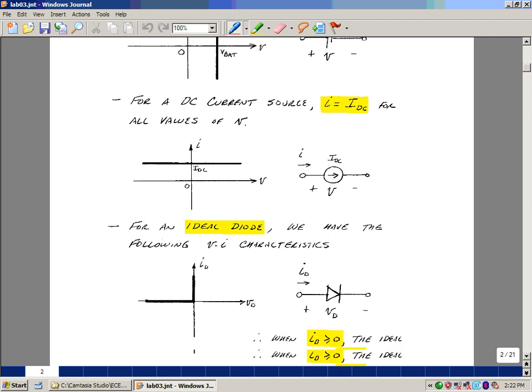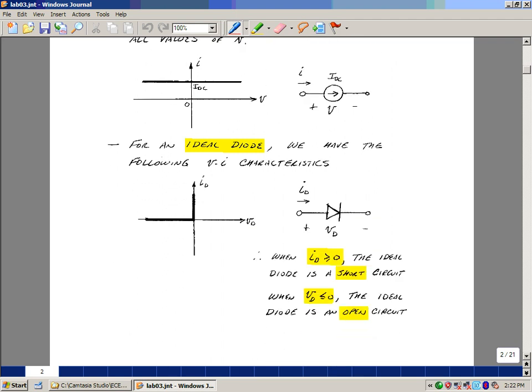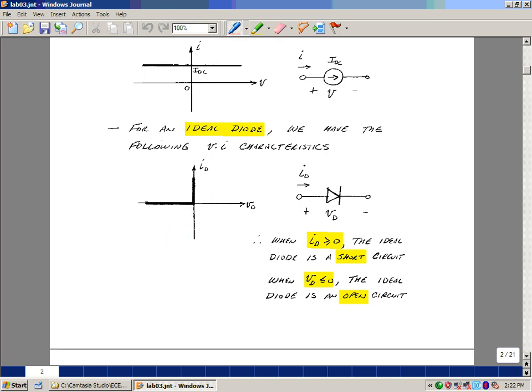We also looked at an ideal diode in the course. If you recall, its definition was that when the current flowing through it is positive or zero, it looks like a short circuit. But when current tries to flow the other direction, it can't. It looks like an open circuit, and the resulting voltage across it is less than or equal to zero.